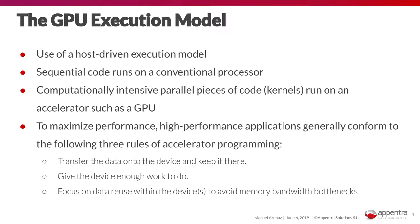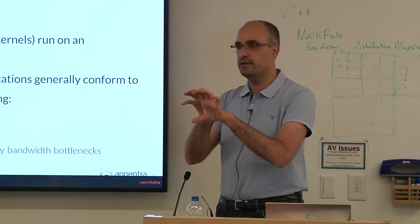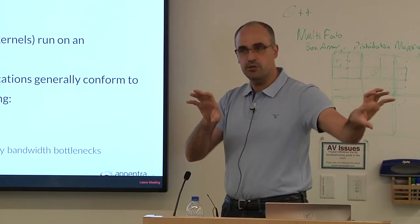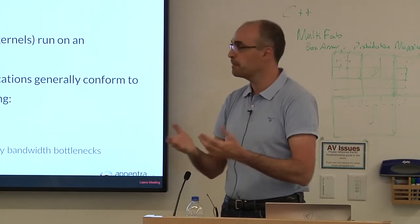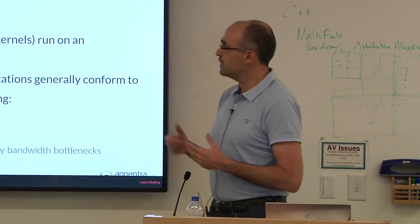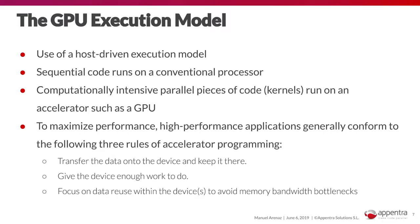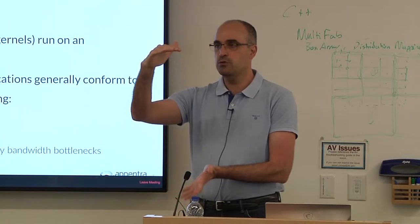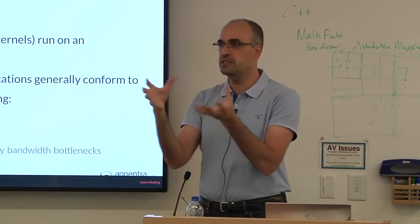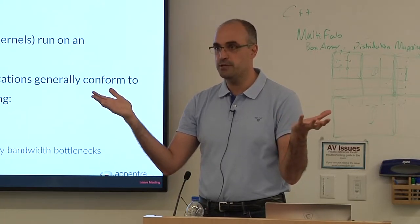The GPU execution model is host-driven. Your code starts on the CPU, and only the parts you specify will be offloaded to and executed on the GPU, with results transferred back to the CPU. Sequential code runs on the CPU. The computationally intensive parts need to be transferred to and accelerated on the GPU.